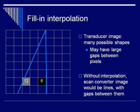We've saved the most important of these processing features for last: fill-in interpolation. Remember that when we talked about the image produced by the transducer, it may have many different shapes based on the transducer morphology. Some of these shapes, like curvilinear or phased array, may have large gaps between pixels in the far field. Without interpolation, the final image the scan converter produced would be multiple lines with huge gaps between them. Rather than leave those gaps there, we use fill-in interpolation. Fill-in interpolation predicts what those missing pixels would look like — it's another averaging technique.